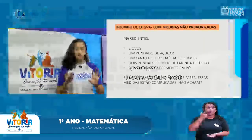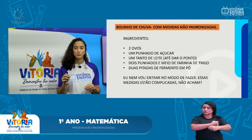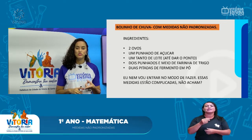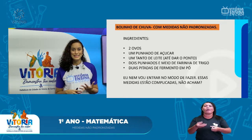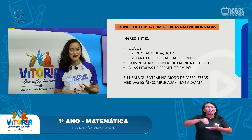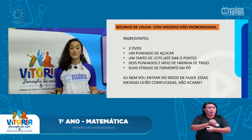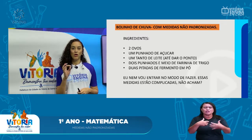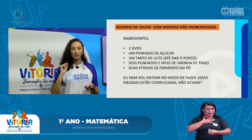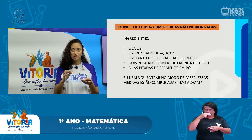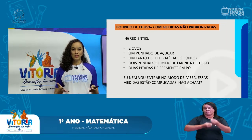Eu trouxe uma receita muito legal de bolinho de chuva. Ingredientes: 2 ovos, 1 punhado de açúcar, 1 tanto de leite até dar um ponto, 2 punhados e meio de farinha de trigo, 2 pitadas de fermento em pó. Eu nem vou entrar no modo de fazer, porque essas medidas já estão complicadas demais! Quanto é um punhado? Será que um punhado meu é igual a um punhado seu? Isso dificulta a elaboração da receita.